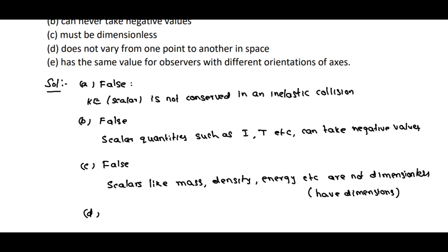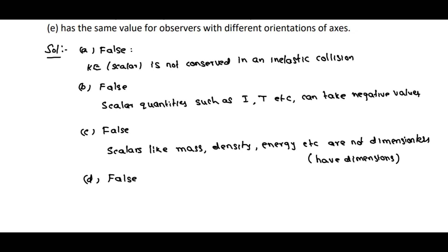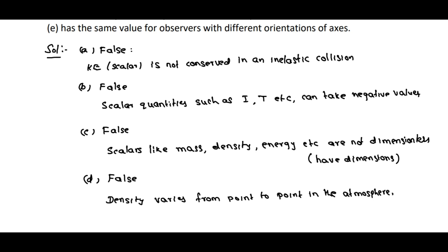Statement D — that a scalar does not vary from one point to another in space — is also false. For example, density is a scalar quantity, yet the density of the atmosphere varies from point to point. When temperature varies, density varies as well.